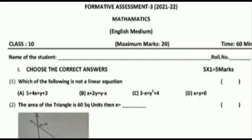First bit, choose the correct answers. 5 questions, 5 marks. Which of the following is not a linear equation? Option A: 5 plus 4x equal to y plus 3. Option B: x plus 2y equal to y minus x. Option C: 3 minus x equal to y square plus 4. Option D: x plus y equal to 0.